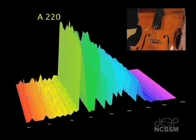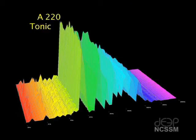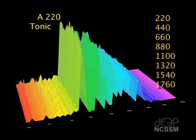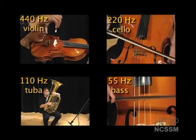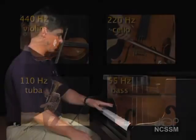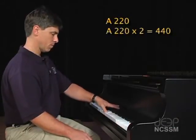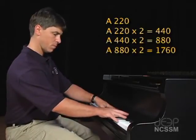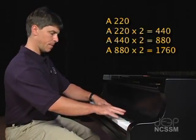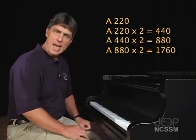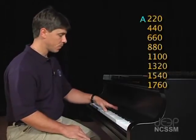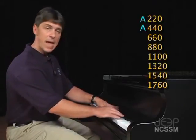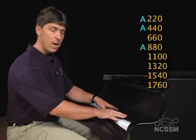We know that A, the tonic note, is 220 hertz. What other frequencies that are shown are the note A? As you can see, there are four A's represented in these numbers: 220, 440, 880, and 1760.